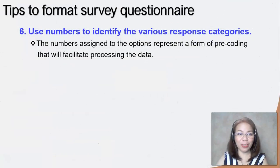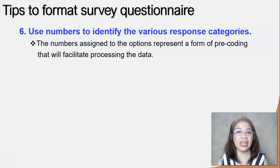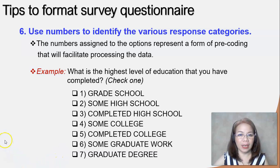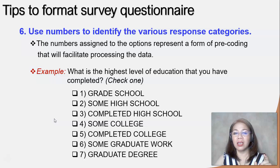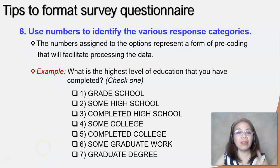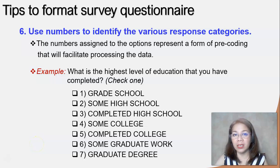The next tip is to use numbers to identify the various response categories. The numbers you assign to each option represent a form of pre-coding that will facilitate the processing of your data. For example: 'What is the highest level of education that you have completed?' — the question is written in lowercase, the specific instruction is enclosed in parentheses, the choices are written in uppercase, and each choice has a corresponding number. Later, when you encode the data into Excel, you can use these numbers to represent answers when coding.